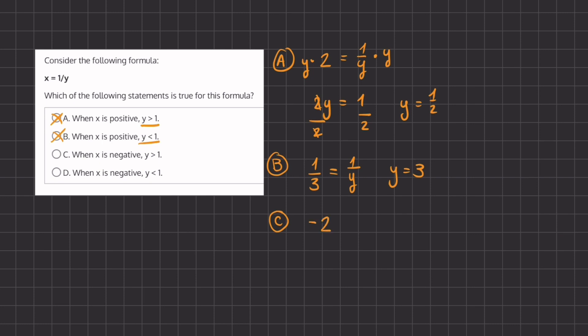If we pick x to be negative 2, we have 1 divided by y, and if we again multiply y on both sides, we have negative 2y equals 1. Now, we can divide negative 2 on both sides, and we have y equals negative half.